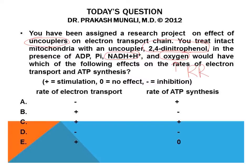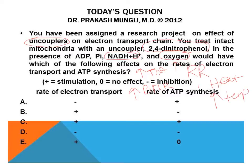Increased oxygen consumption means more oxidation of NADH+H⁺, which in turn increases the TCA cycle — the tricarboxylic acid cycle — burning acetyl-CoA into carbon dioxide. This leads to an overall increase in basal metabolic rate. Additionally, since protons are leaking through the uncoupler, the energy of the proton motive force is not captured as ATP but is instead released as heat, increasing body temperature.